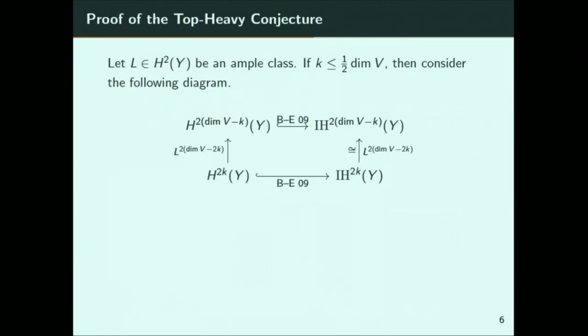Intersection cohomology of a variety is always a module over the cohomology of that variety, but this map is not always an injection. When you have this stratification by affine cells, it is an injection. So we set up a commutative diagram: the diagram commutes, this injection is one result, we have Hard-Lefschetz giving an isomorphism here. Since we have a commutative diagram with two injections and an isomorphism, this map has to be an injection — giving the top-heavy conjecture for hyperplane arrangements.